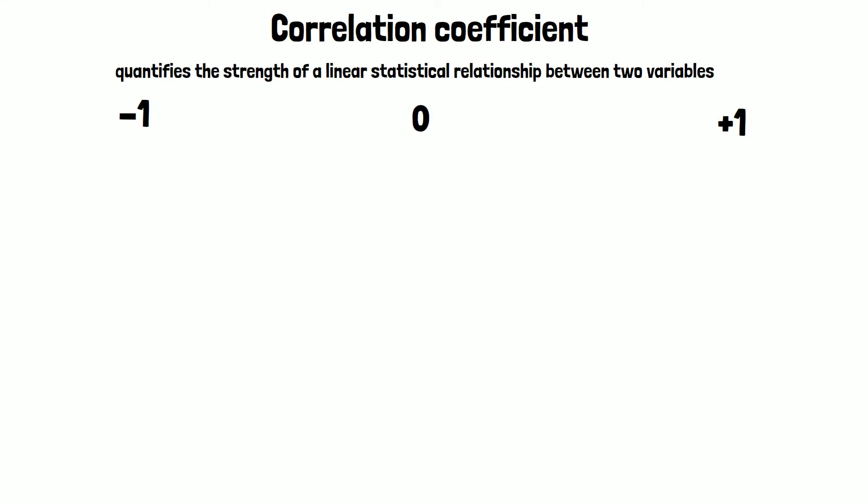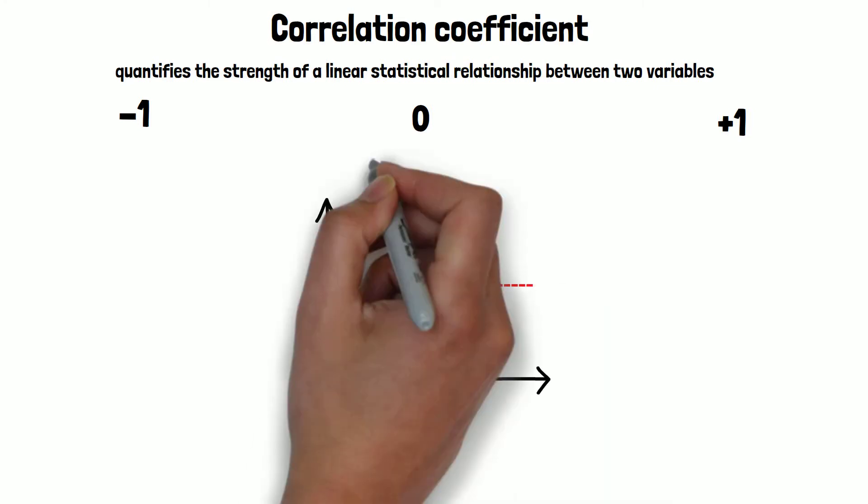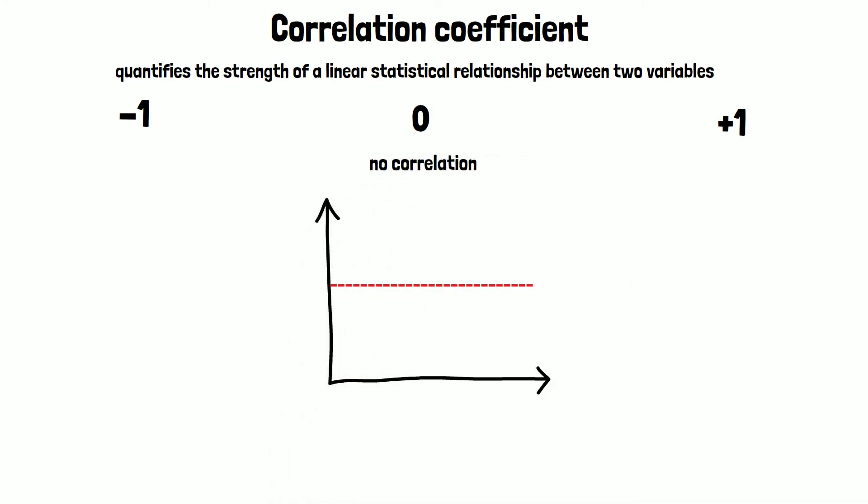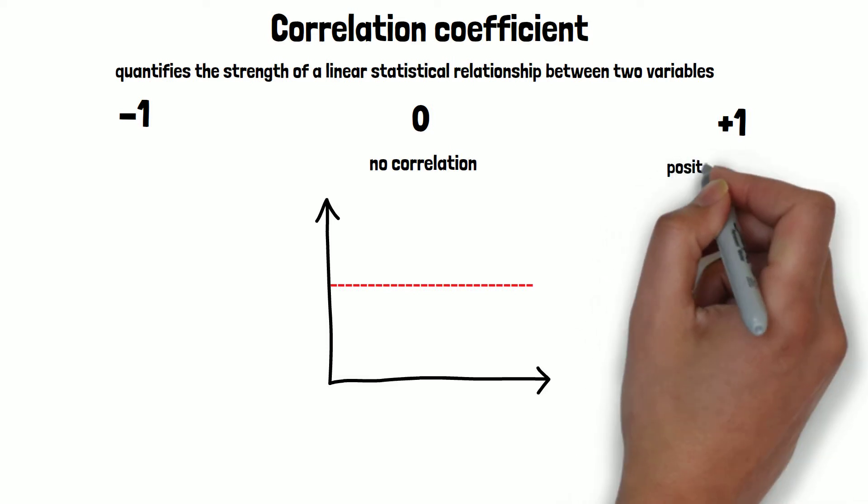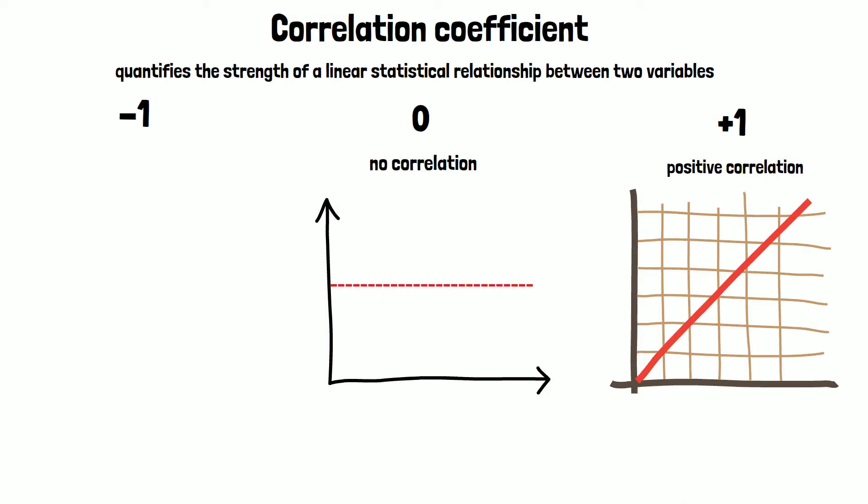They all range between minus 1 and 1. A coefficient of 0 indicates that there is no correlation between the two variables. Values between 0 and plus 1 indicate a positive correlation. So, an increase in the first variable goes hand-in-hand with an increase of the second variable.